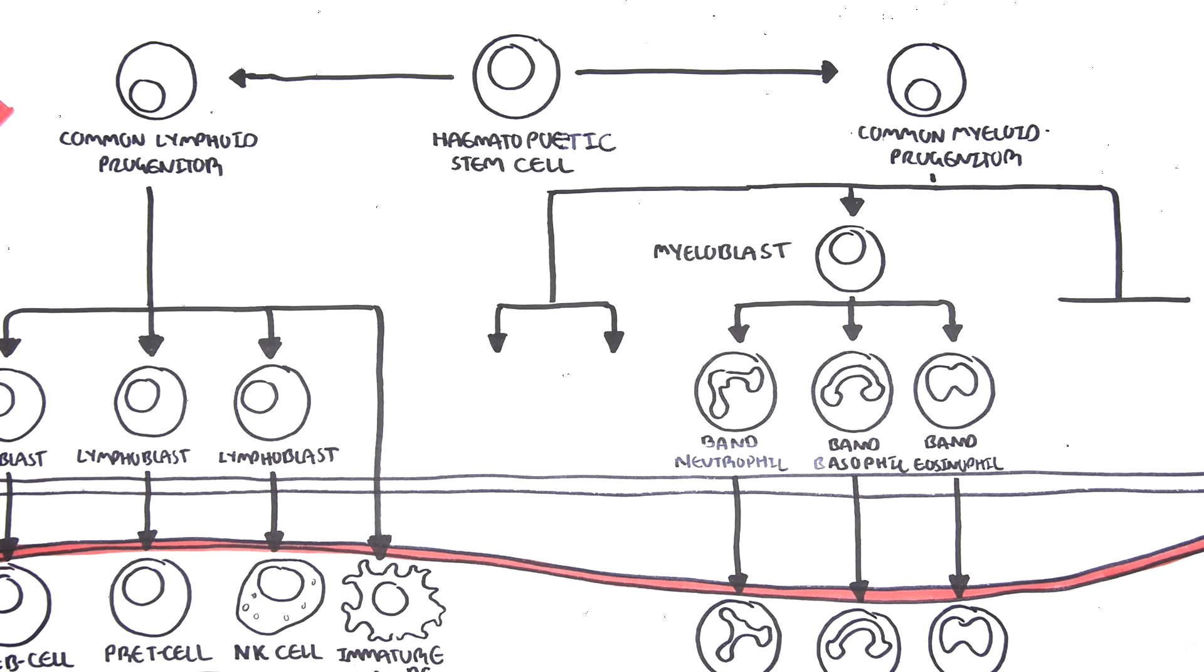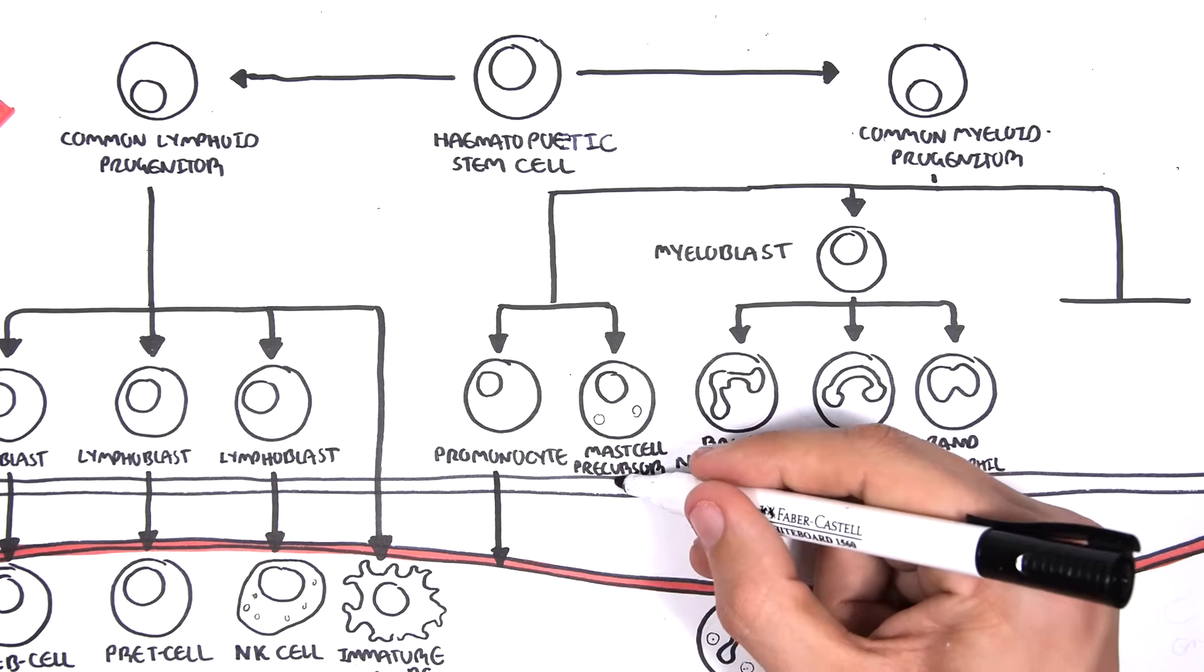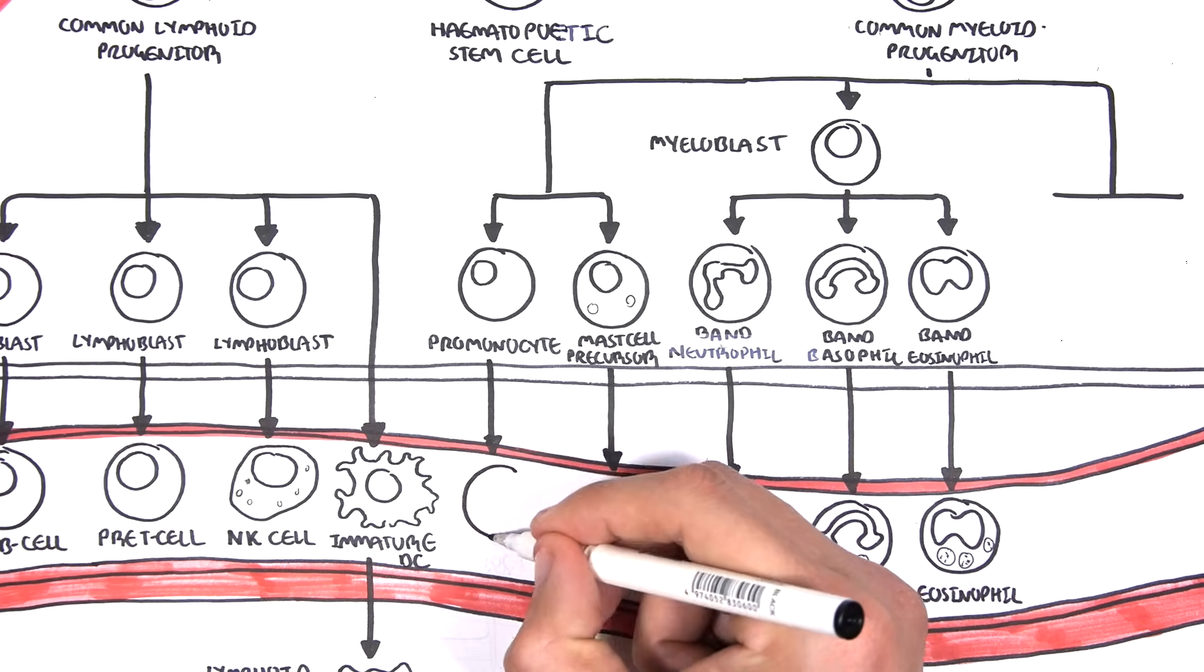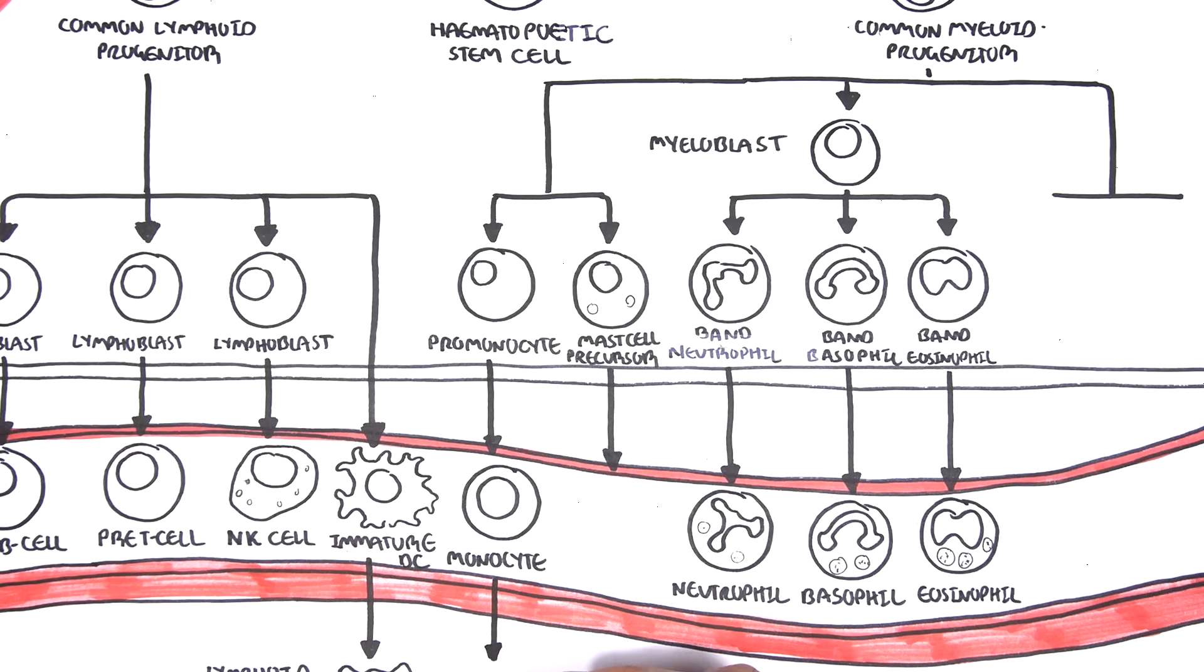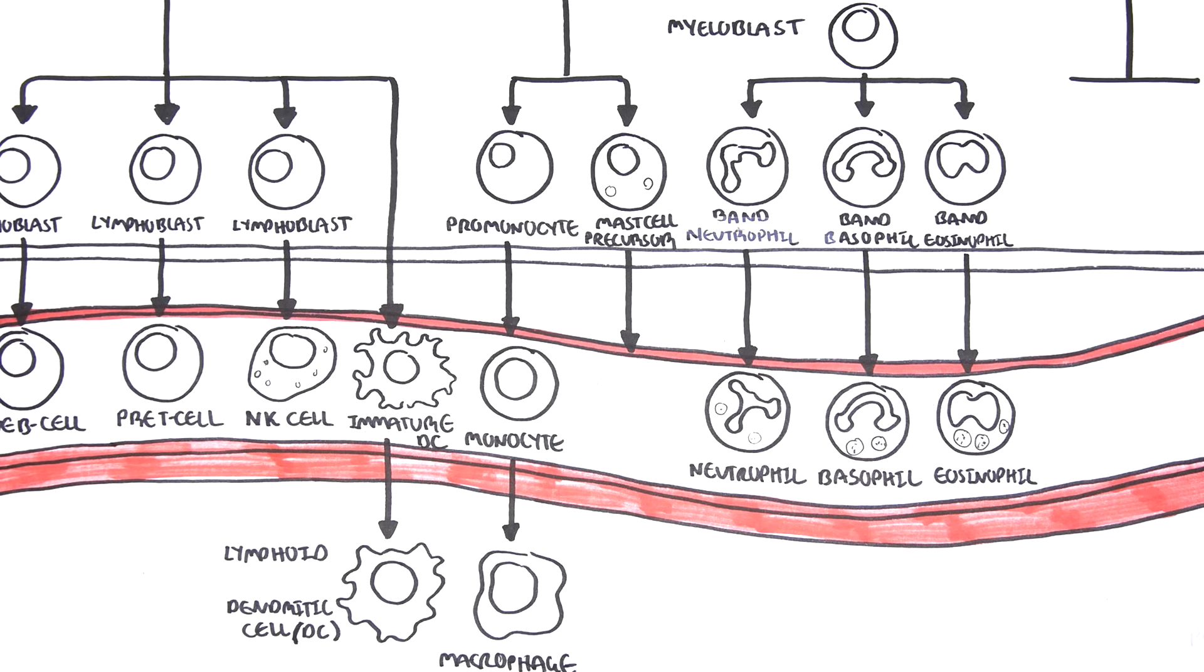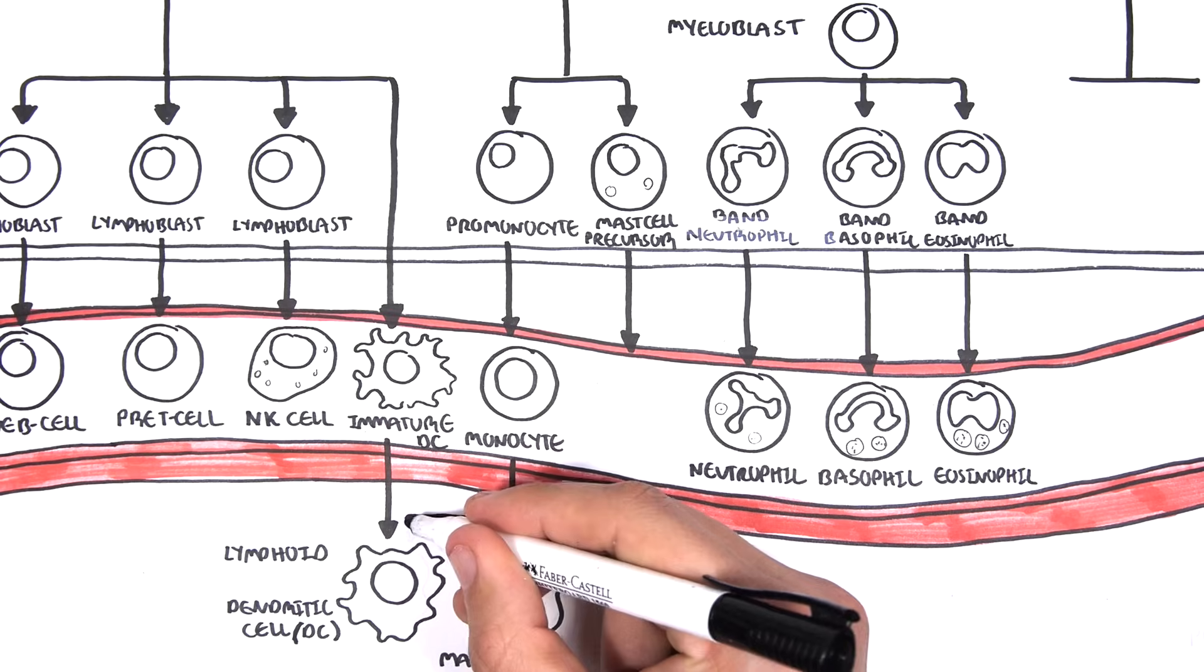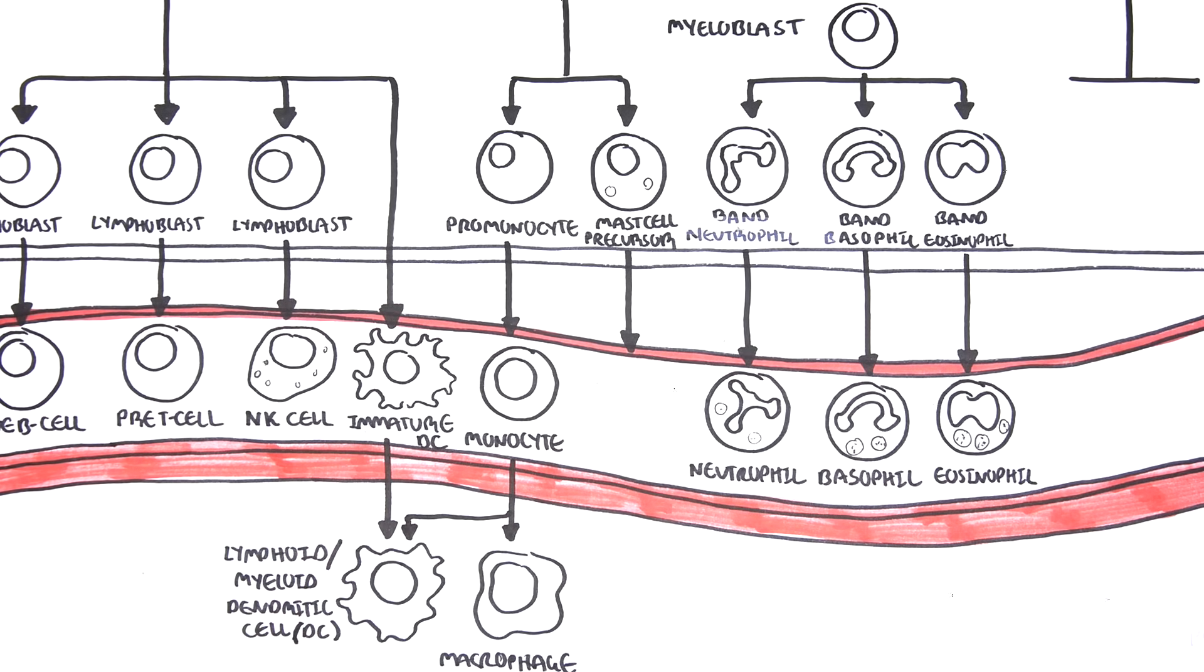The common myeloid progenitor cells can differentiate and become pro-monocytes and mast cell precursors. The pro-monocytes then mature and become monocytes. Monocytes are essentially circulating macrophages. Once they move into a tissue, such as the skin, they become tissue macrophages. Macrophages are antigen-presenting cells which are important in the connection between the innate immune system and the adaptive immune system. The monocytes or pro-monocytes can also become dendritic cells. If they become dendritic cells in the tissue, they are referred to as myeloid dendritic cells. We have two important antigen-presenting cells: the macrophage and the dendritic cell.